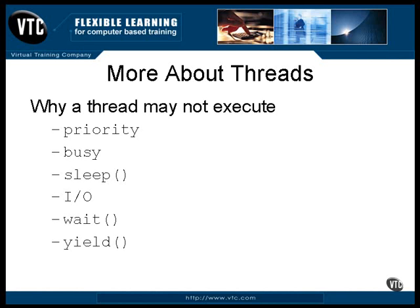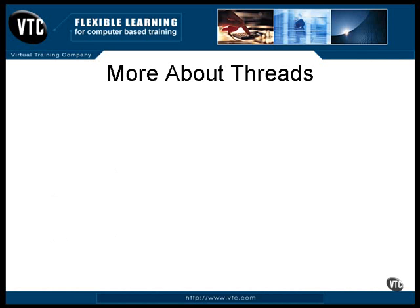The thread class has a yield method that will temporarily halt the thread and allow other threads to continue execution. There are also some other useful methods inside the thread object — you can set the execution priority of a thread at any time.